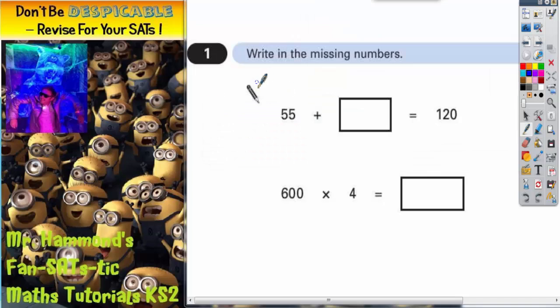Question number one. Write in the missing numbers. So we've got 55 add a mystery number equals 120, and we've got 600 times by 4 equals this mystery answer here.